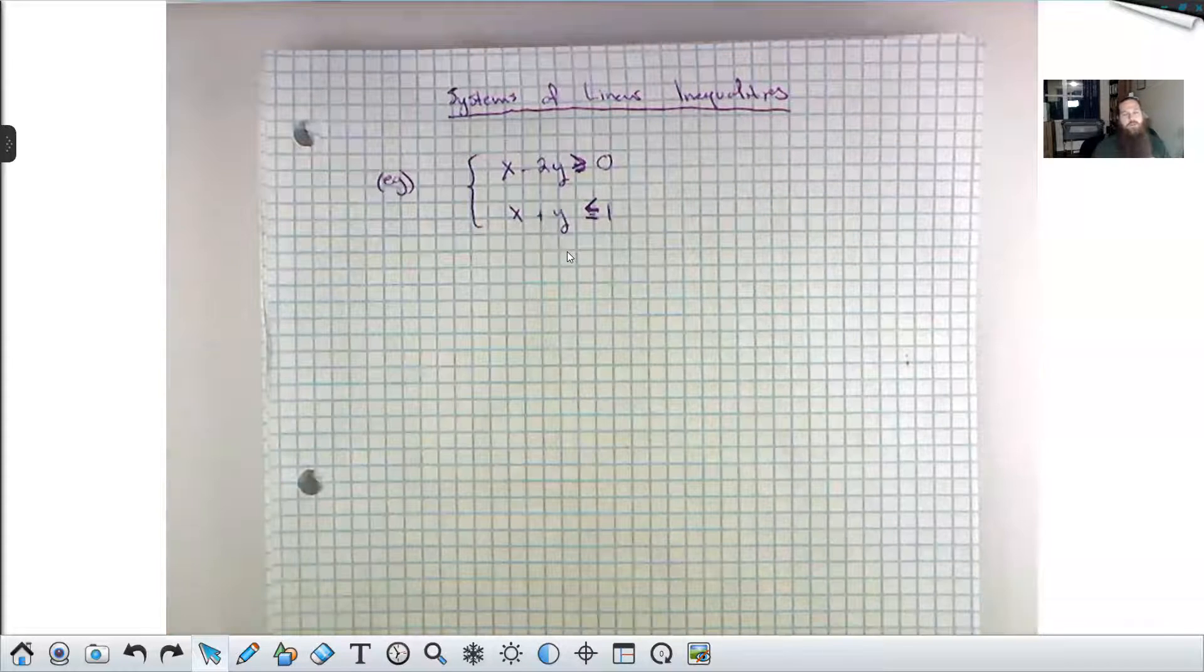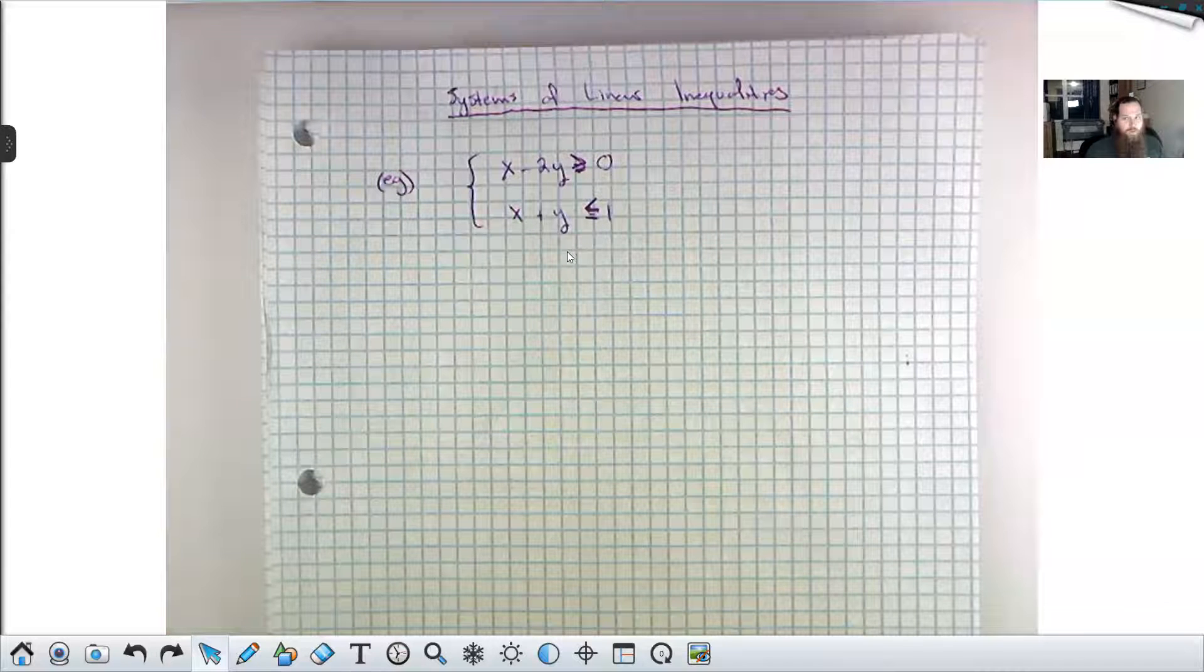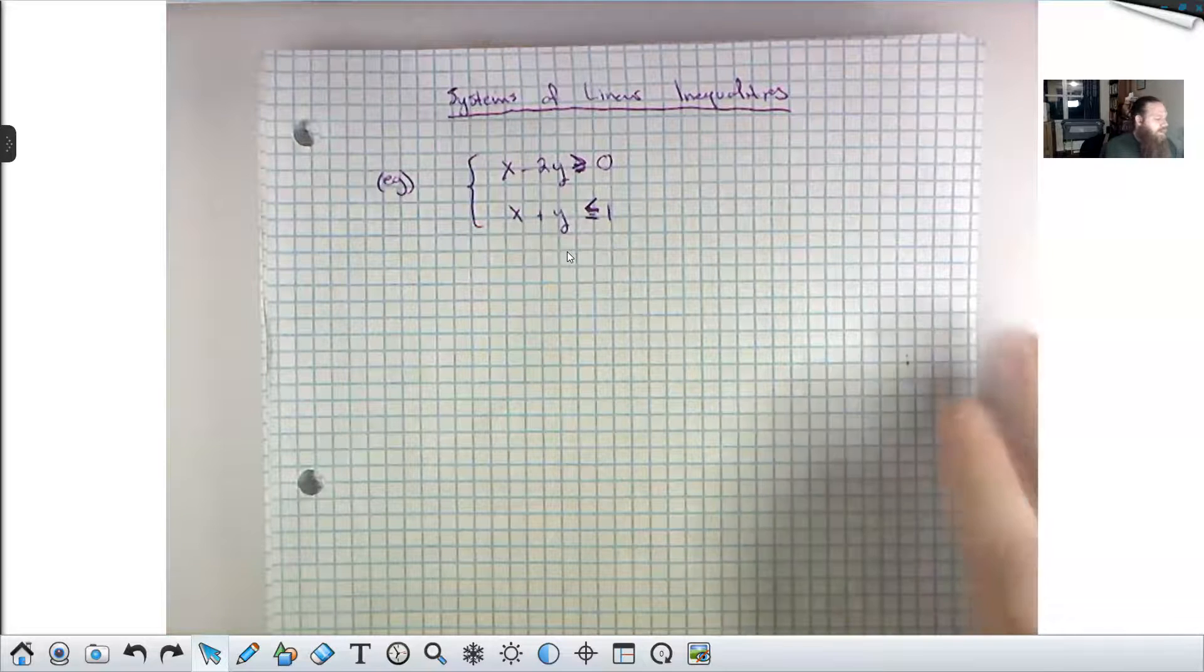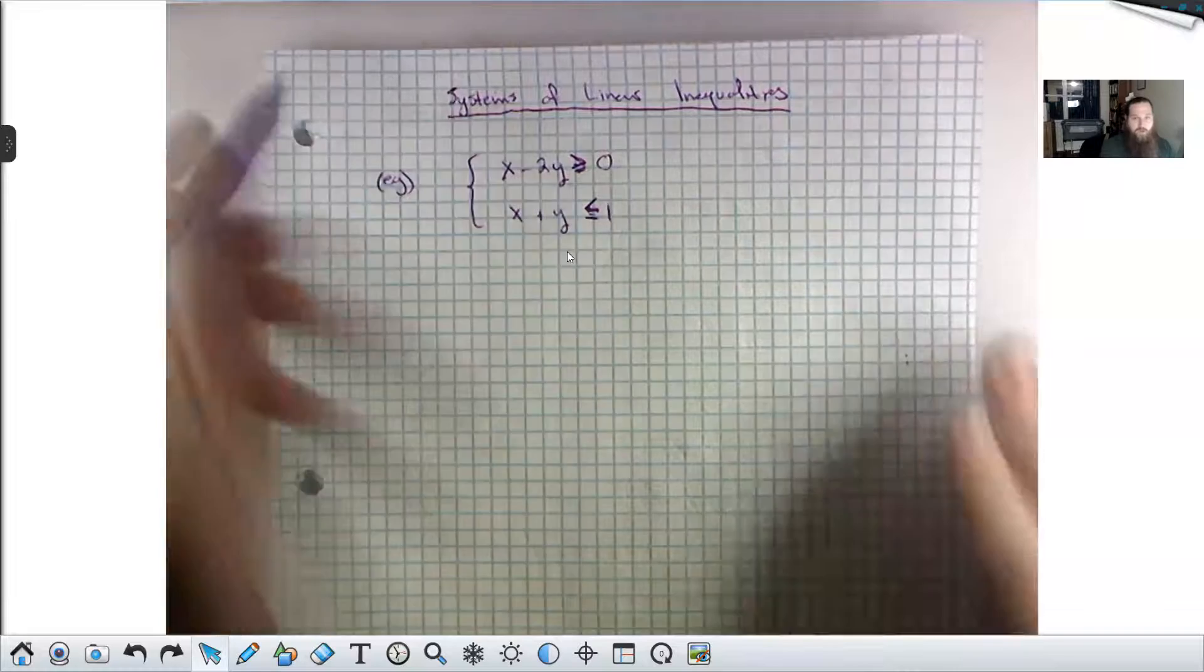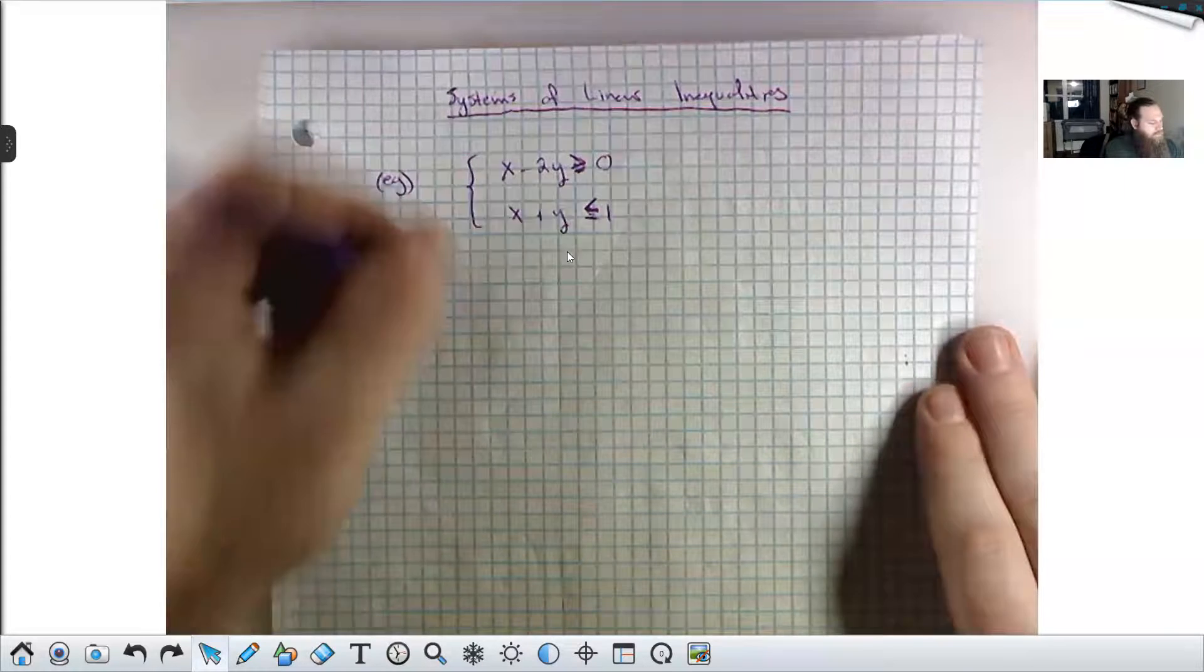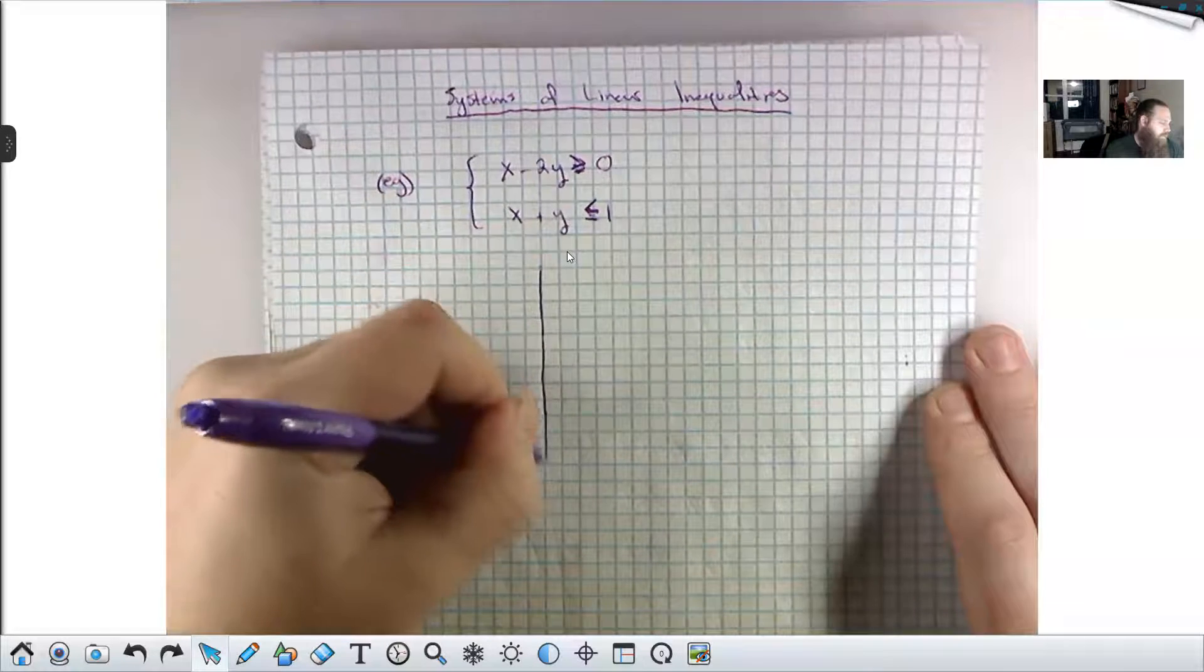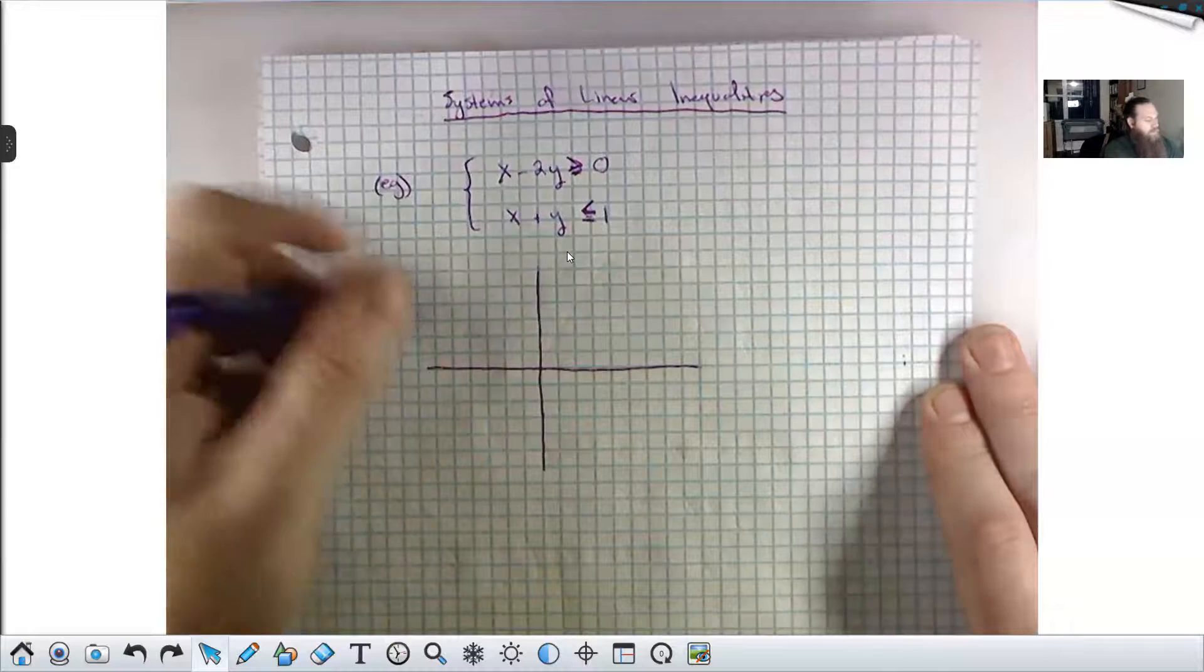We're just looking for ordered pairs that satisfy this. We do this by working with one at a time. Following exactly what I showed you on the previous page, we work with one inequality at a time. We're going to shade a region for each of those. And then the overlap between the shaded regions, those are the ordered pairs that solve both. Shaded region one solves inequality one, shaded region two solves inequality two. The overlap solves both. So those will be our solutions to the system. It will be all the ordered pairs that get shaded twice.